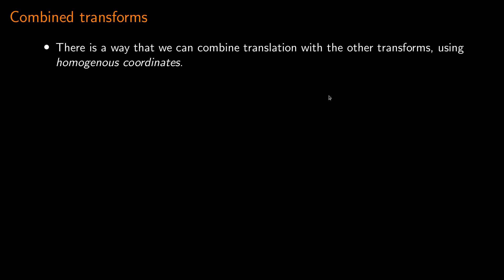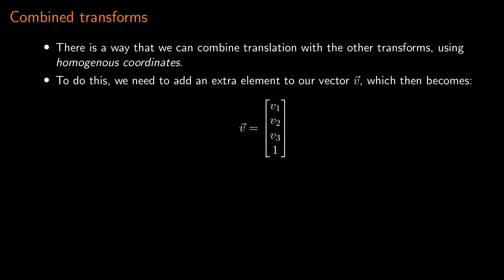Luckily, there is a way to combine translation with all the other transforms using what are known as homogeneous coordinates. To make this work, we need to add an extra element to our vector V, which becomes V equals (V1, V2, V3, 1). So whereas before V was a 3-element vector, we've now changed it to be a 4-dimensional vector by putting an extra element equal to 1.